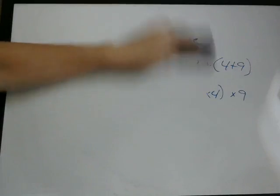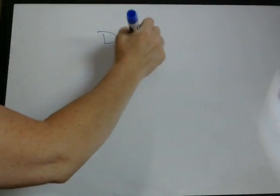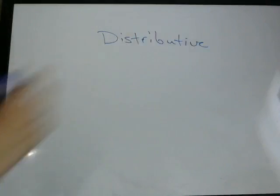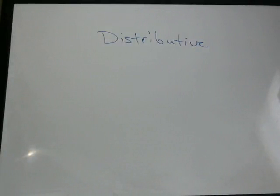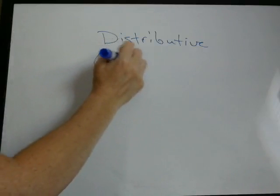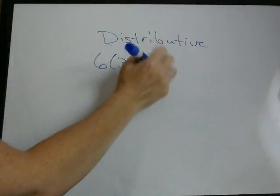The property that's a little more complicated is called the distributive property. And here you can think about it as you are distributing multiplication over addition. And this is a type of problem that you see, for example, 6 times x. So if you're doing more sort of algebraic things.